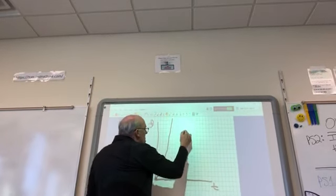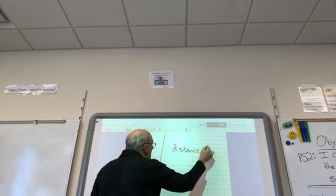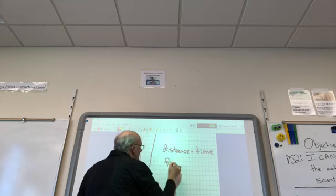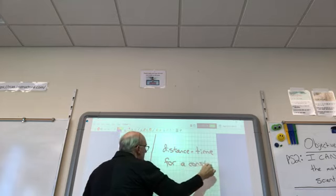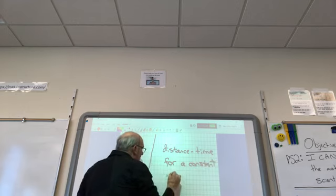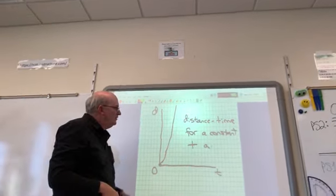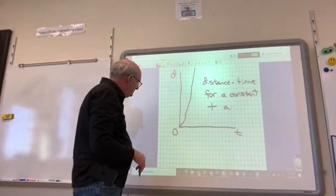So this is the distance time for a constant positive acceleration. And that's about as complicated as it gets where you get these exponents on those.